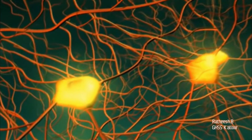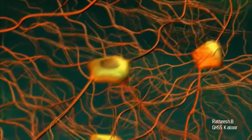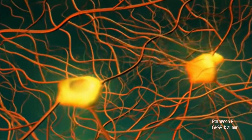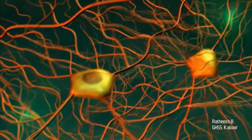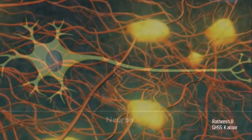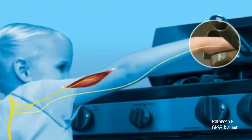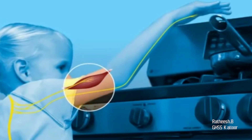How are these impulses generated and transmitted through the neurons? In this video, we will discuss how the impulses are generated in a neuron and how these impulses are propagated through the neuron.